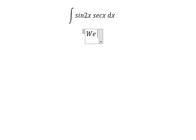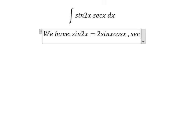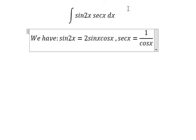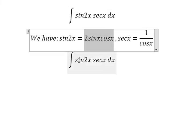We have sin2x equals 2sinx cosx, and secx equals 1 over cosx. So I will put this one going here.